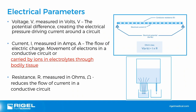Moving on to electrical parameters. Most of you will be aware of these terms but we'll briefly go over the basics. Voltage is the potential difference creating the pressure driving current around the circuit. Current is the flow of electric charge, and resistance is what reduces that flow. A common analogy is thinking of electricity as water: an increase in reservoir volume is analogous with an increase in voltage. The diameter of the pipe represents resistance — the more you constrict the pipe, the less current flows.